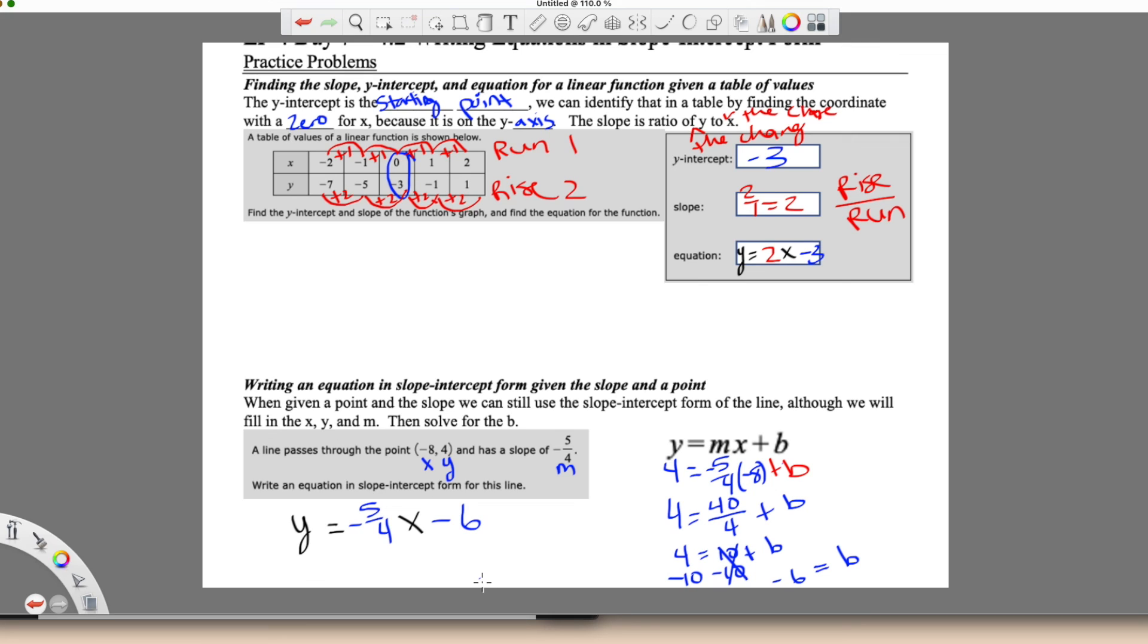So that is writing an equation in slope-intercept form either given a table or given a point and a slope. So go ahead and give that a try.